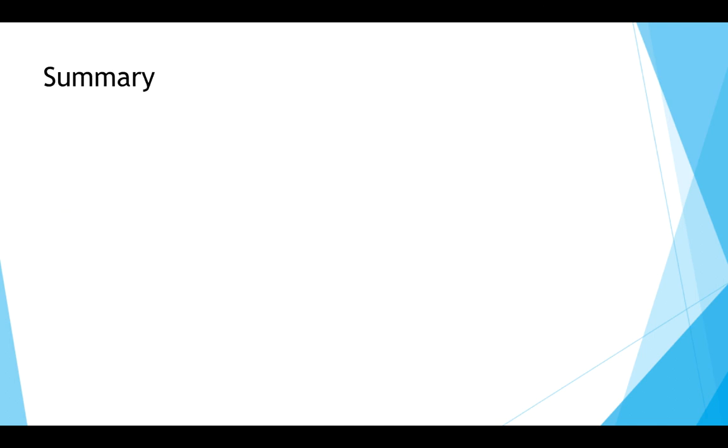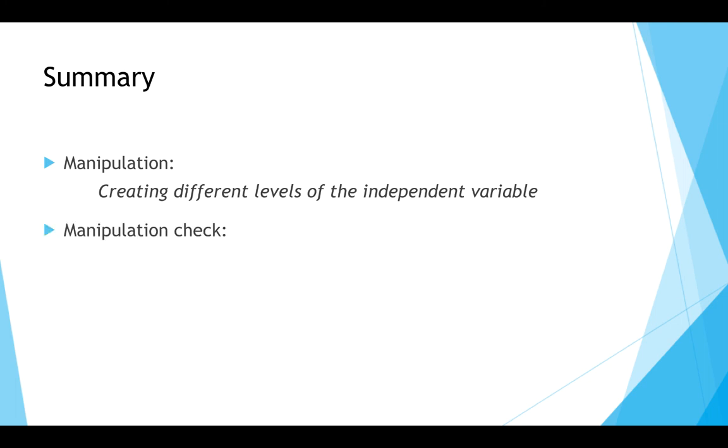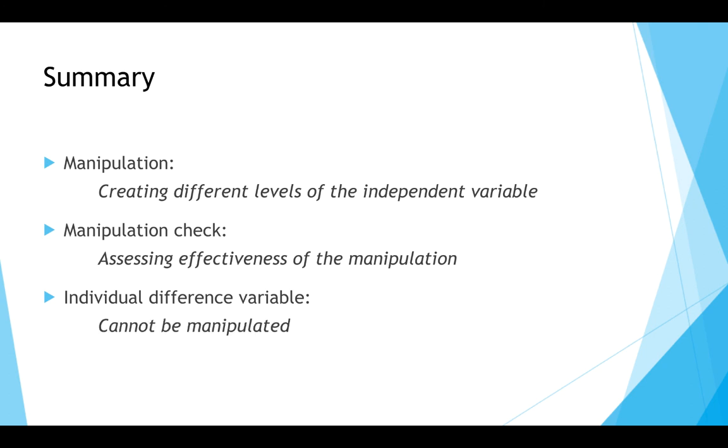So to summarize, manipulation is about creating different levels of the independent variable. By doing a manipulation check, the effectiveness of the manipulation can be assessed. And an individual difference variable is a variable that cannot be manipulated.